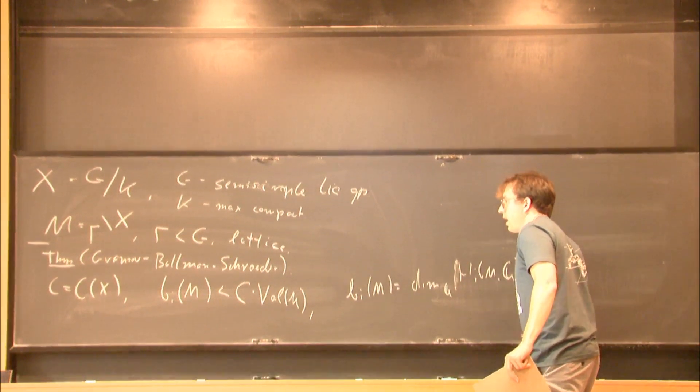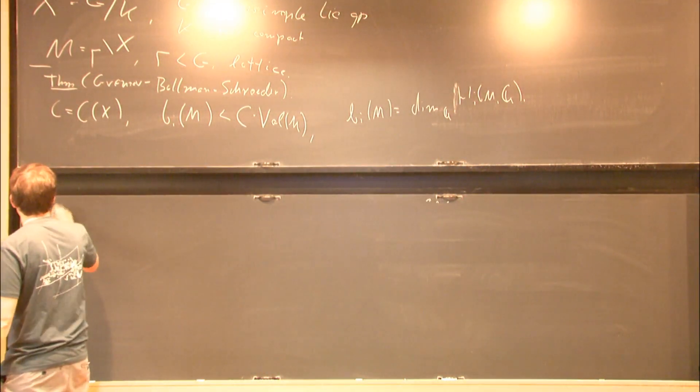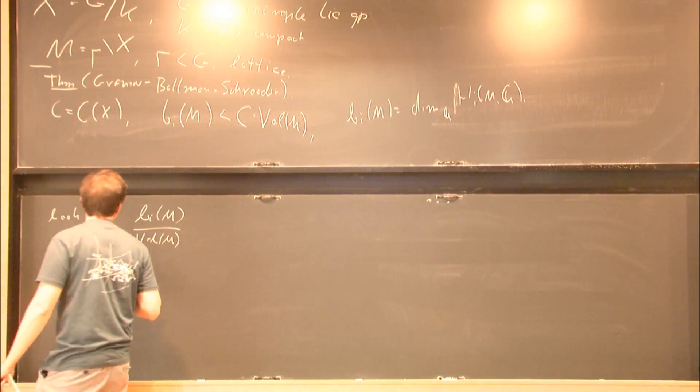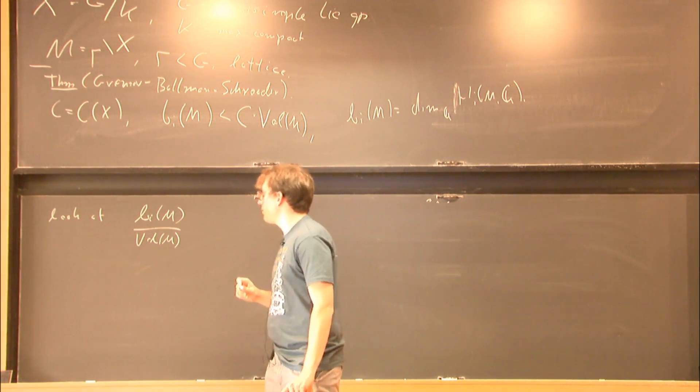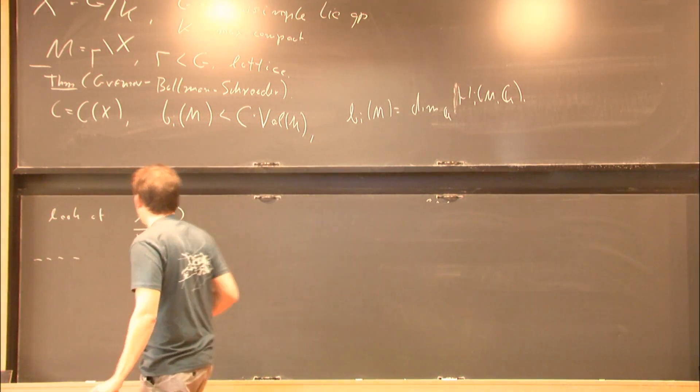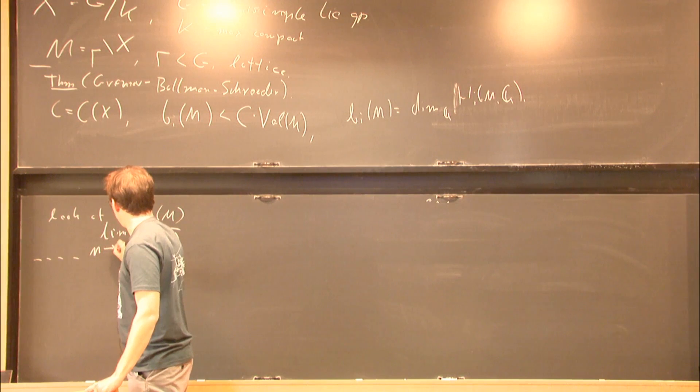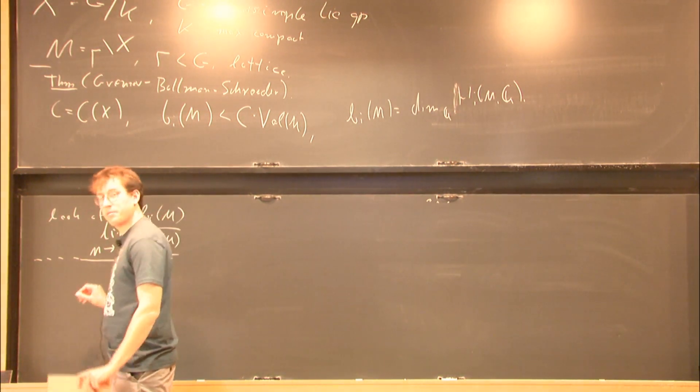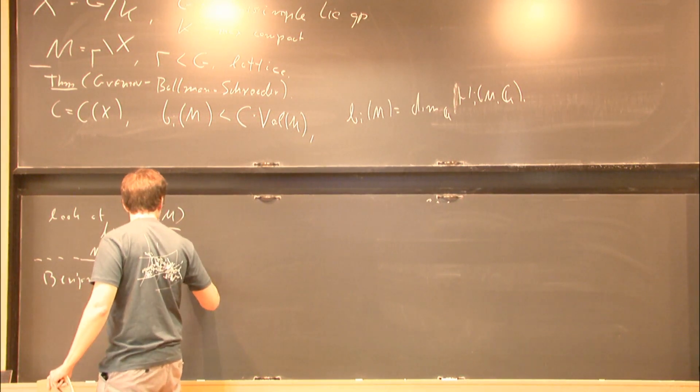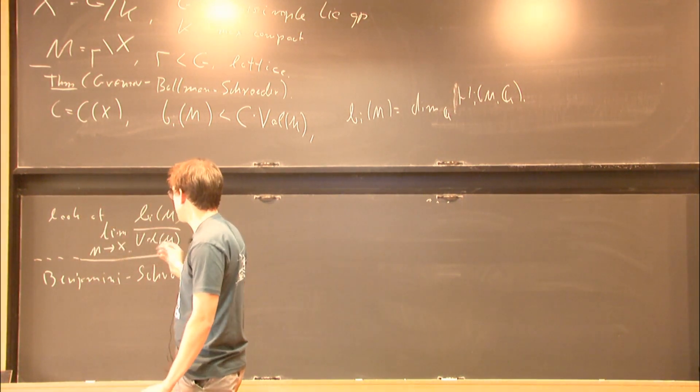Therefore, it makes sense to look at Betti numbers normalized by volume. So look at B_i(M) divided by volume. Maybe there are some natural conditions under which this should converge to something. It turns out that this led to a lot of fruitful research. I will introduce one condition that implies that this converges. So, lim M to X in some sense. It will be called Benjamin-Schramm topology.